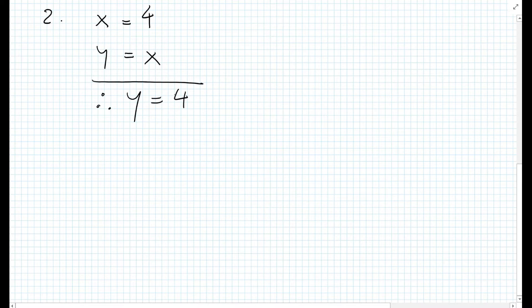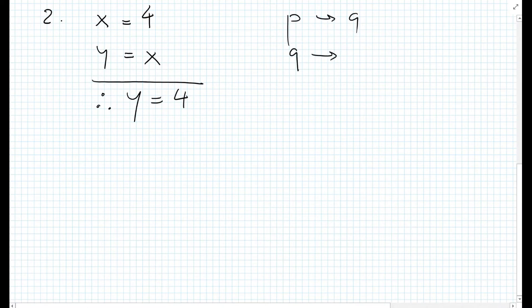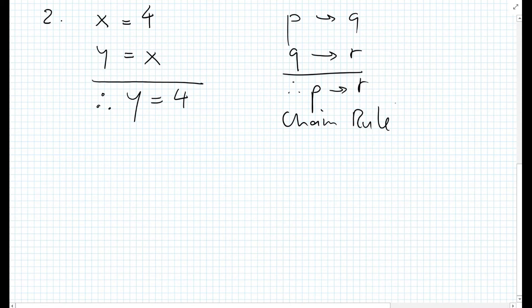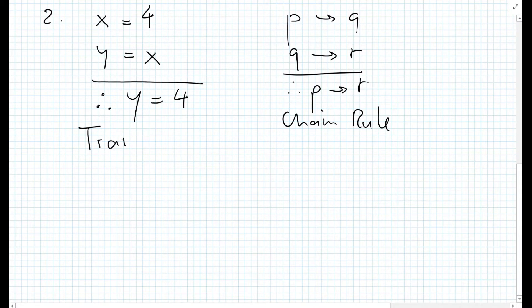This looks very similar to one of the logic operations we've done so far. We had: if P then Q, if Q then R, therefore if P then R — and here we use the chain rule. But this is actually a little bit different, because here we don't have if-then statements. Here we're using a different type of postulate or property. Let me introduce that: we're using something called the transitive property.